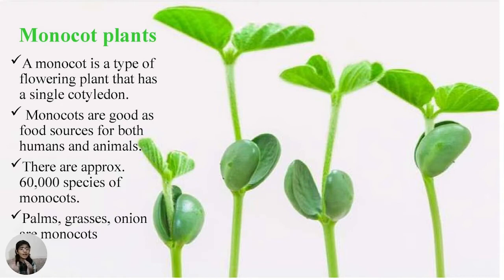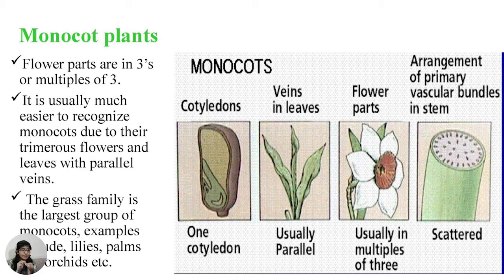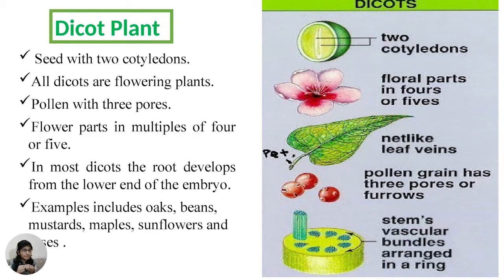Some grasses, onions, and wheat are examples of monocots. Monocot flower parts come in multiples of three. It is usually much easier to recognize monocots due to their flower structure and parallel leaf veins. The grass family is the largest group of monocots. Examples include lilies and orchids.